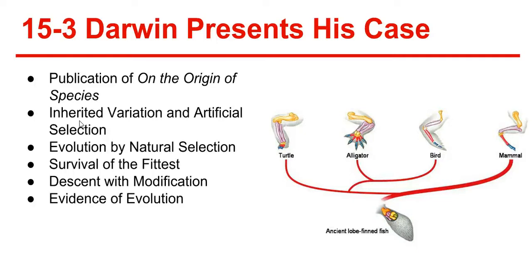Variations were very important because they often could lead to beneficial traits. In artificial selection, nature provided the variation and humans selected those variations they found useful. An example is that the largest and strongest bull is used to breed with cows to produce the largest and strongest offspring. Artificial selection has produced many diverse domestic animals and crop plants.